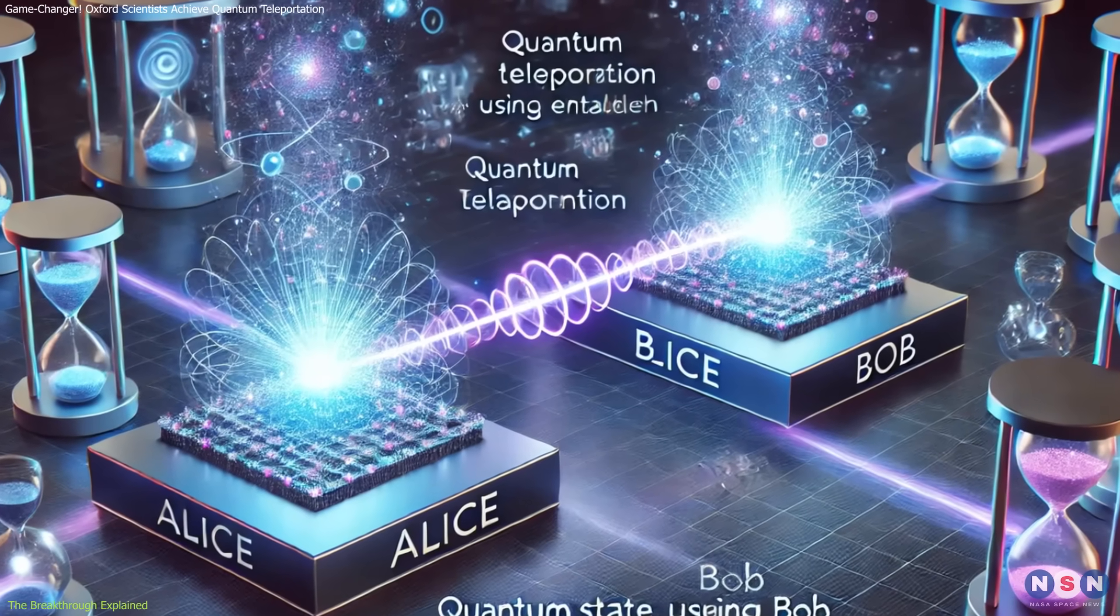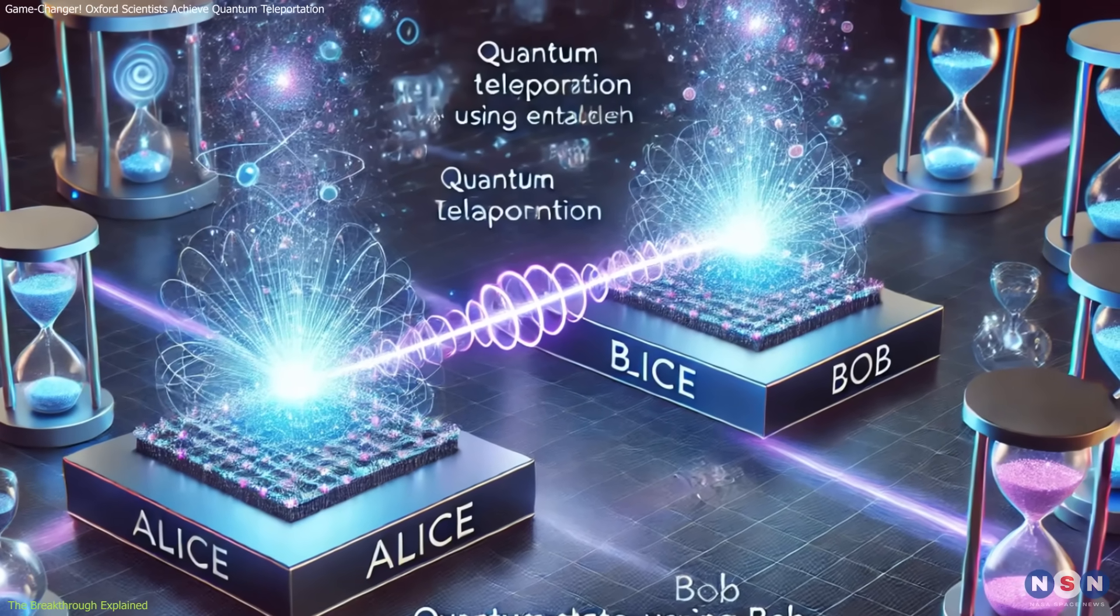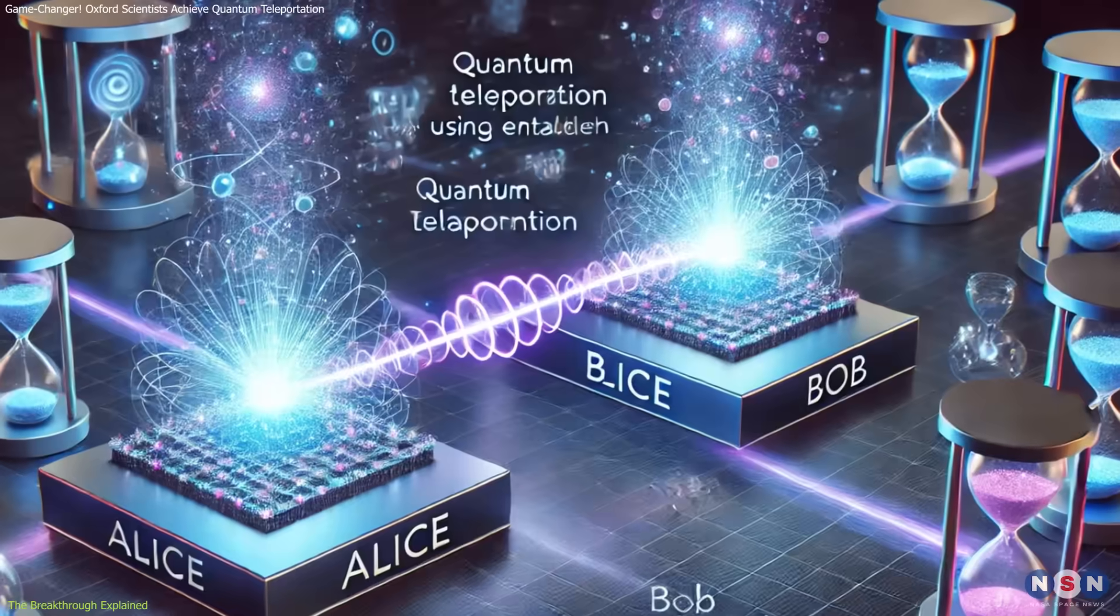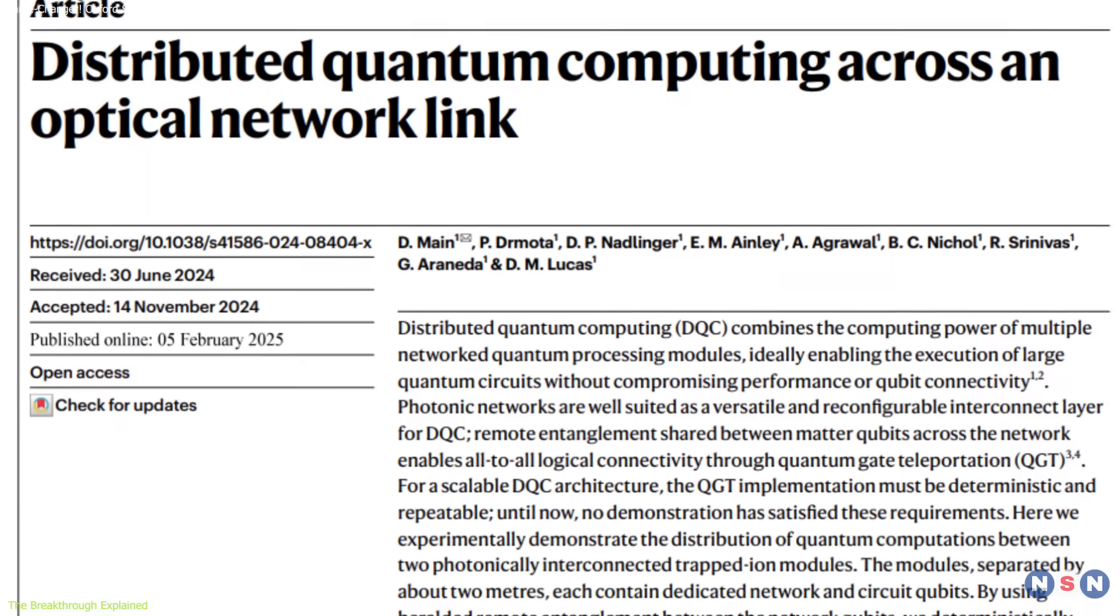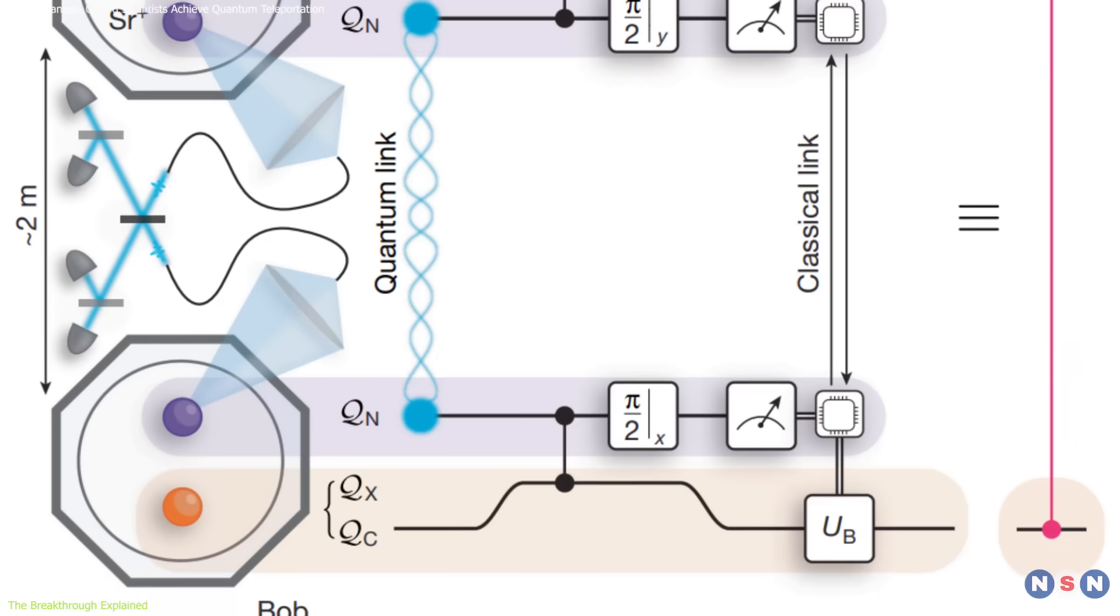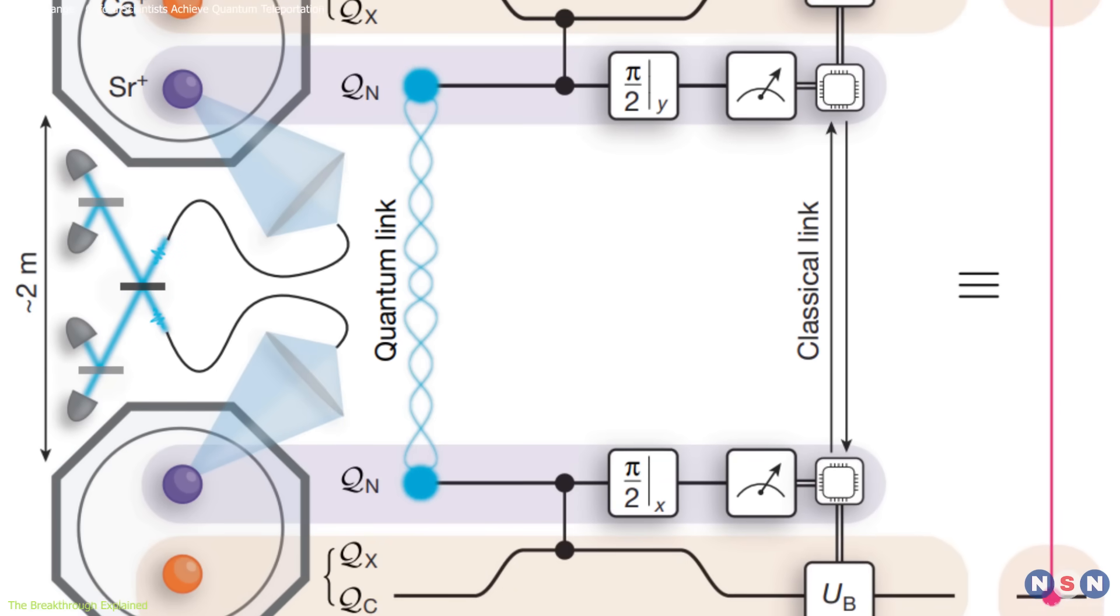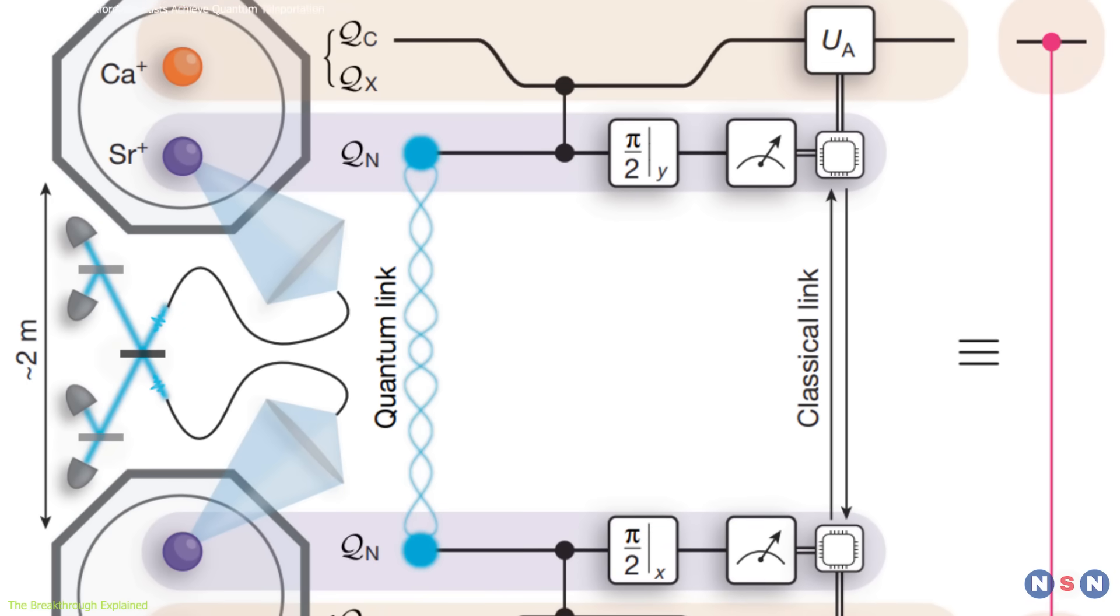Previously, quantum teleportation had been used to transfer quantum states between physically separated systems. However, the Oxford team went further by using teleportation to create interactions between these distant systems.